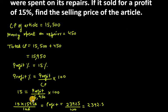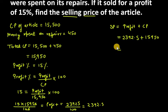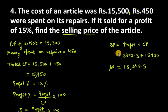Now we need to find the selling price. Selling price equals profit plus CP. Profit is 2,392.5, and cost price is 15,950. Adding them both, the selling price will be 18,342.5. This is the selling price of the article and the answer for question number 4.